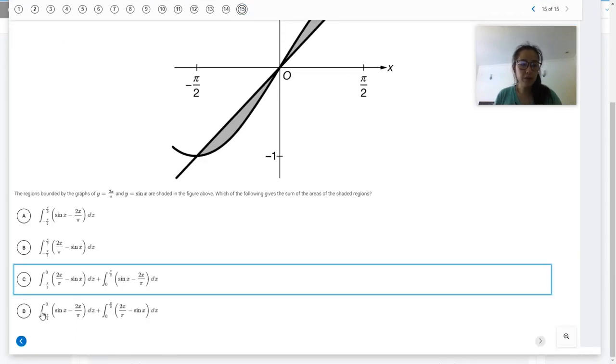So answer choice D does something similar, but opposite. So it does like bottom minus top. So with answer choice D, you're going to end up with a negative answer. And so answer choice C is going to be the one that gets you that positive and correct answer.